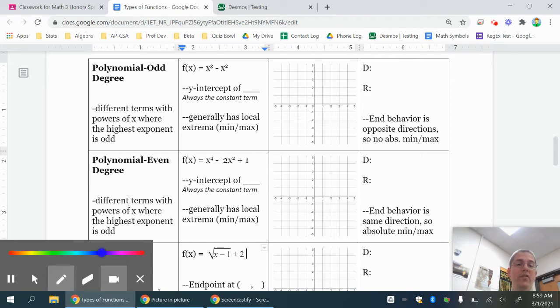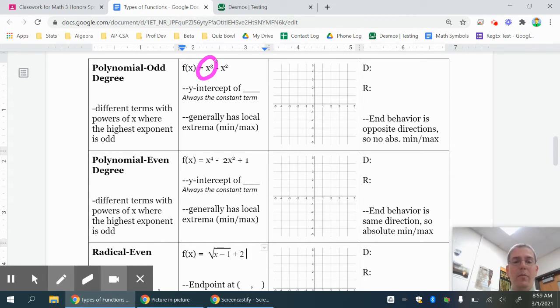Polynomials, remember, had two basic shapes based on their odd degree or even degree. A polynomial is just where you have different terms. You notice in this first one I have two different terms, and you can have different powers of x. The degree is based on the highest power of x, and if my polynomial is in standard form, it should go from the highest power to the lowest power. But the degree is always the highest power.